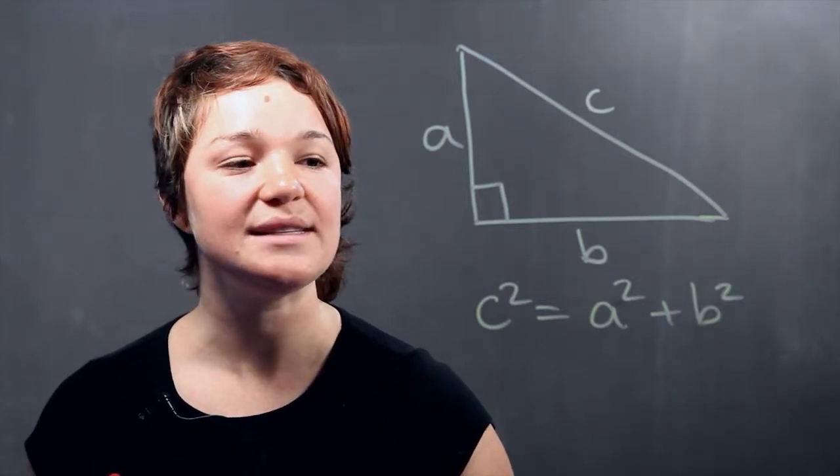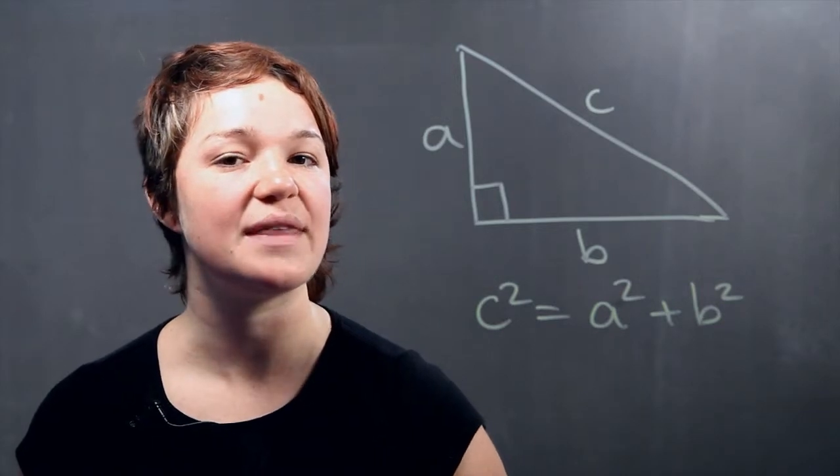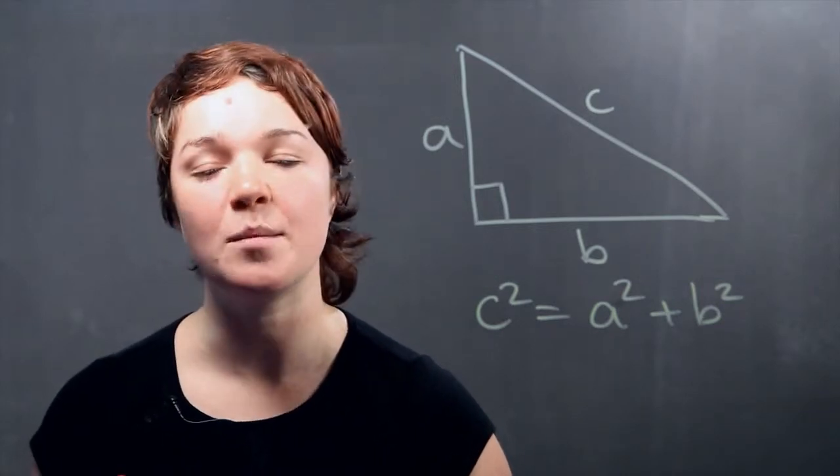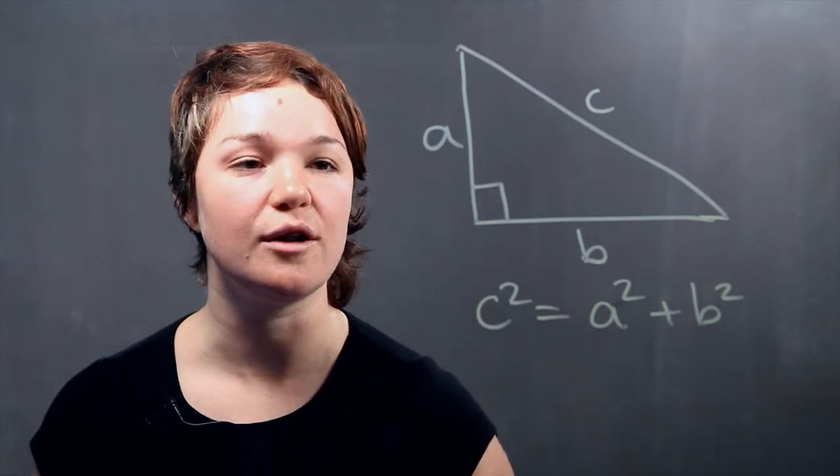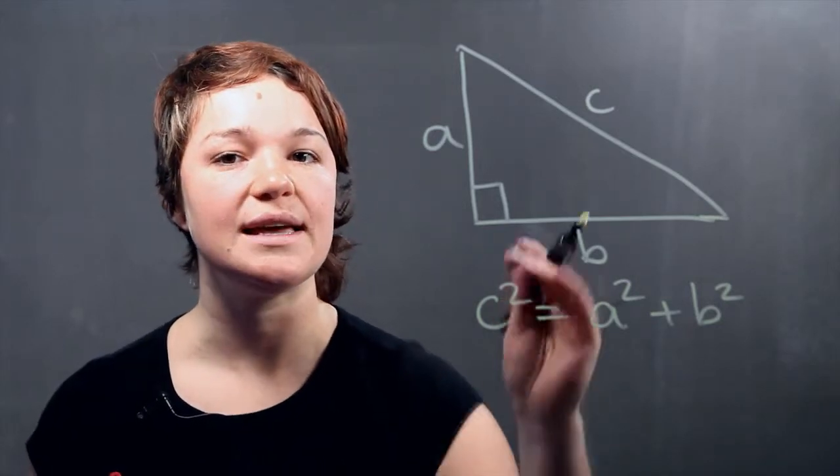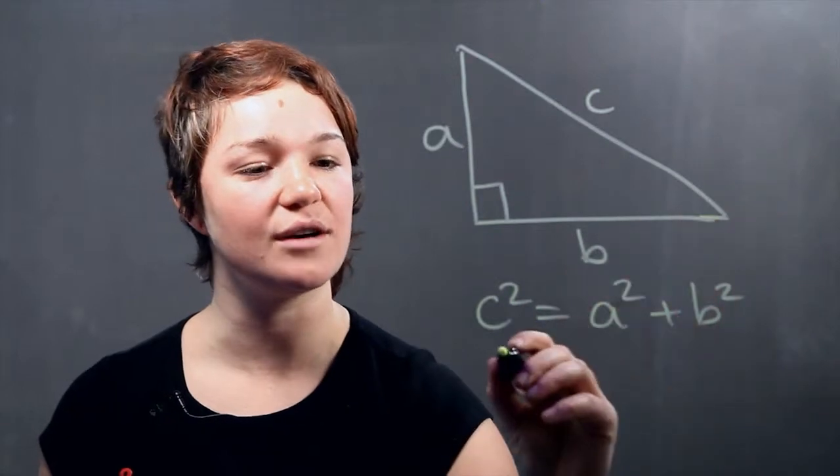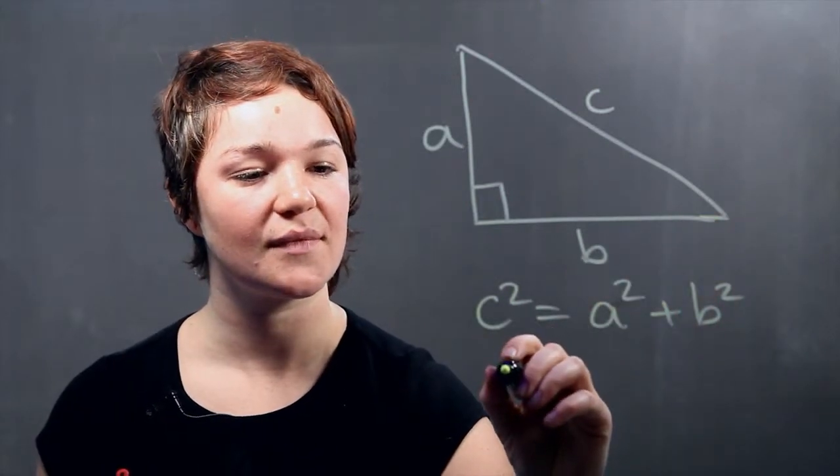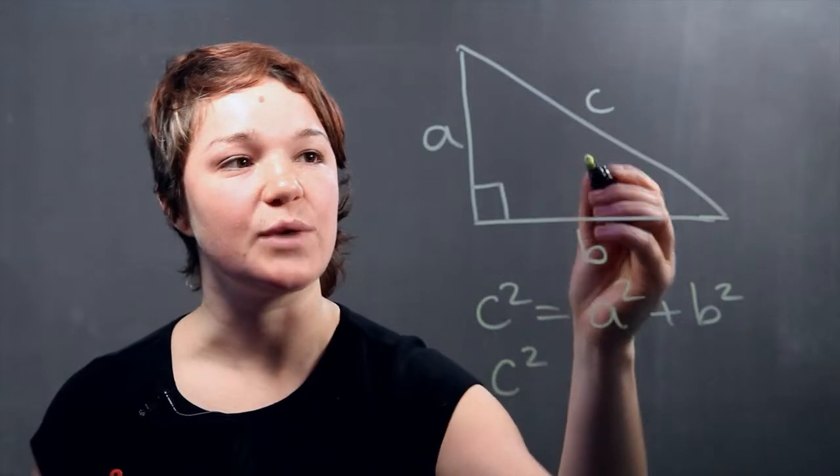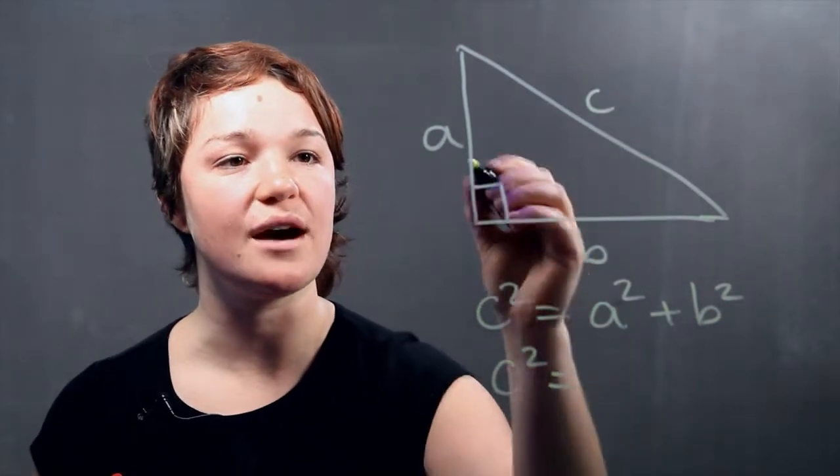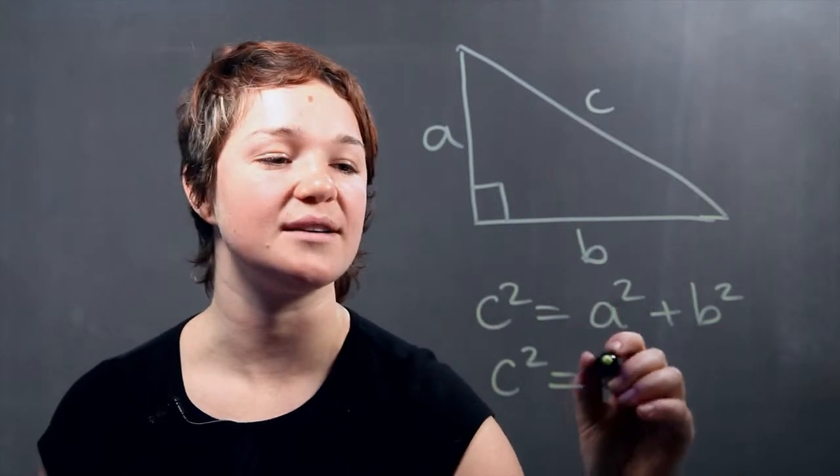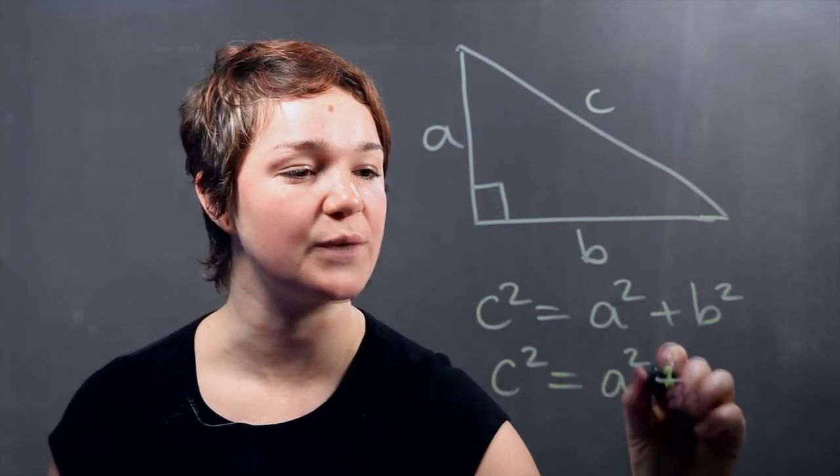Now if we wanted to find out the inverse of the Pythagorean Theorem, or if somebody gave us a triangle and wanted to know if it's a right triangle, all we have to do is measure the length of the longest side, which is C, square it, and see if it's equal to the other two sides squared and combined: A squared plus B squared.